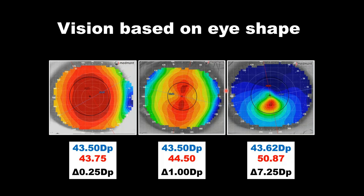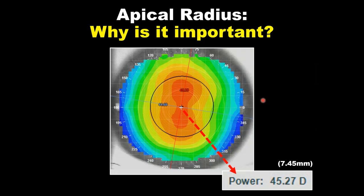K readings do tell us about the gross radius of the eye. In this case, all of these eyes are about 43.5 diopters in flat axis radius. But K readings kind of let us down when dealing with an irregular cornea. If we were looking at the flat radius only, K readings are telling us all these eyes are the same — but as you can tell, all these eyes are very different. So let's consider another point of reference: the radius of the cornea at the center, not the K readings at three millimeters out.